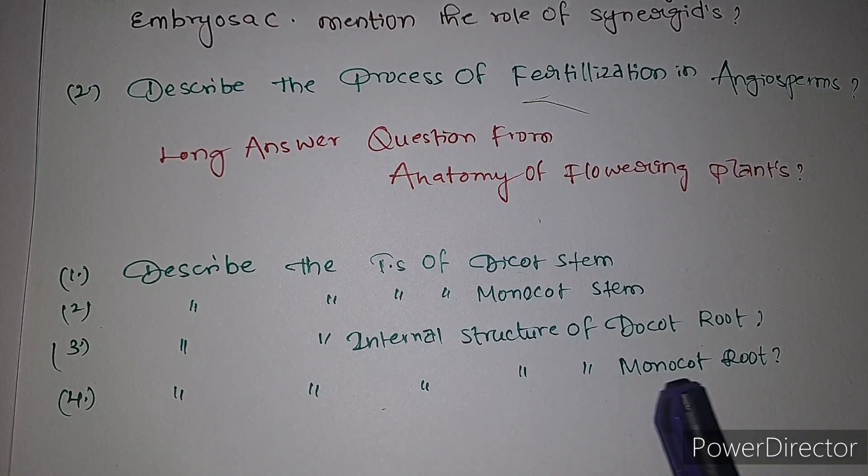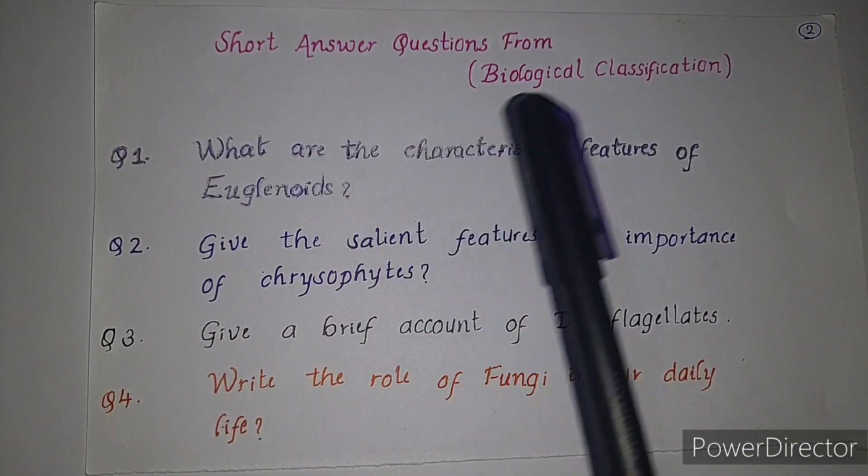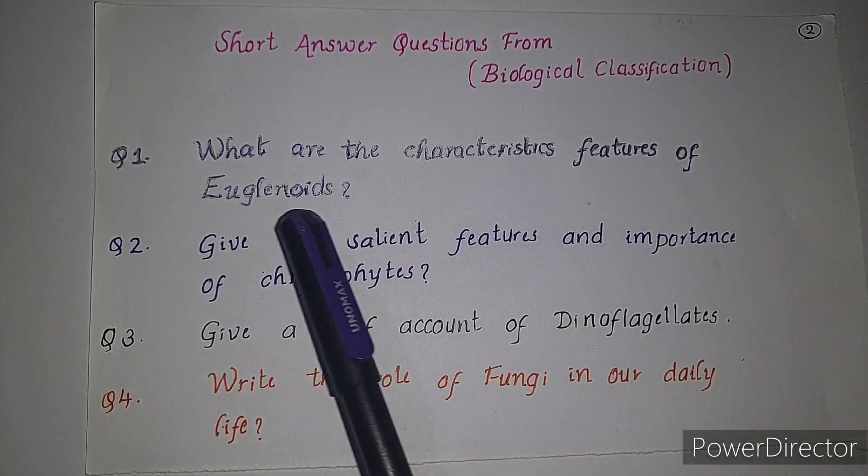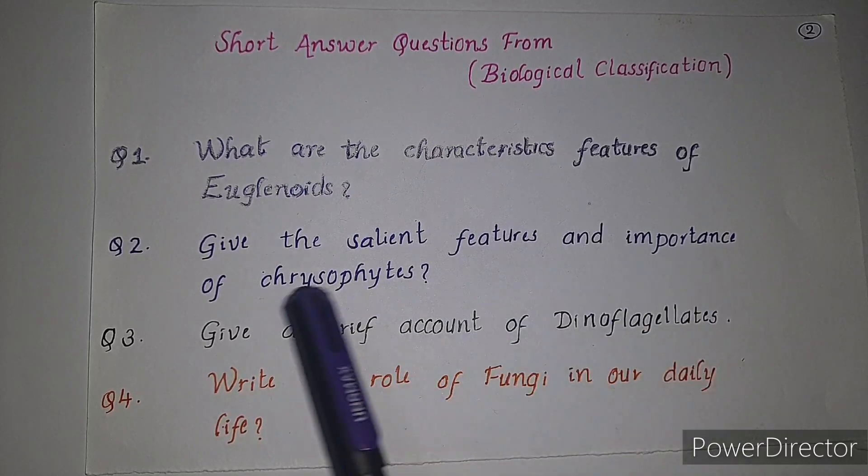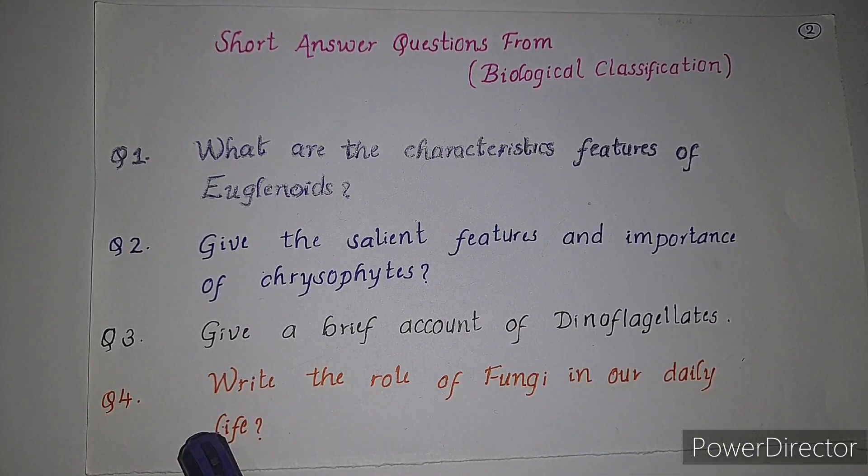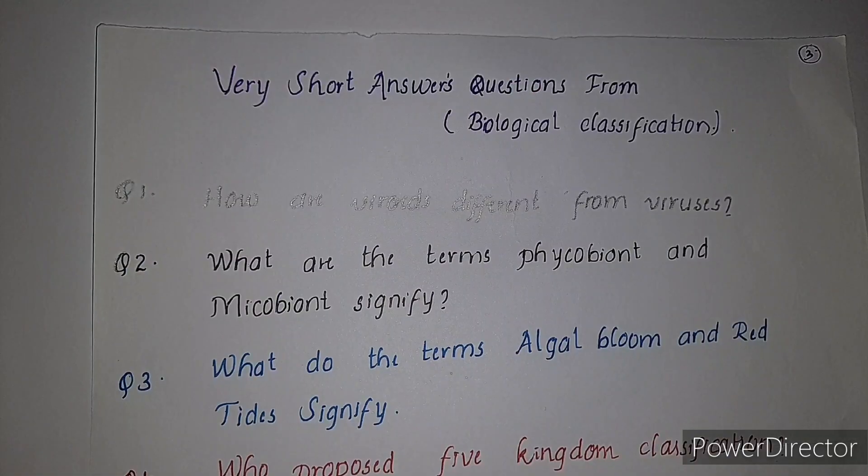Short answer questions from biological classification. First question: what are the characteristic features of euglenoids? Second: give the salient features and importance of chrysophytes. Third: give a brief account of dinoflagellates. Fourth: write the role of fungi in our daily life.